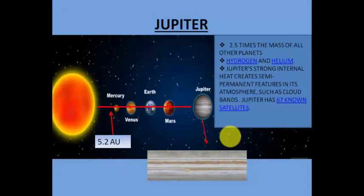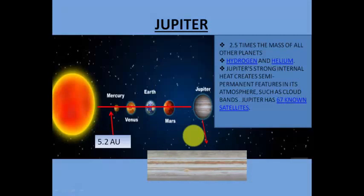Jupiter is 2.5 times the mass of all the other planets combined and contains a lot of hydrogen and helium. Jupiter's strong internal heat creates semi-permanent features in its atmosphere such as cloud bands. Jupiter is known to have 67 satellites, though these satellites and its rings are not visible from Earth.